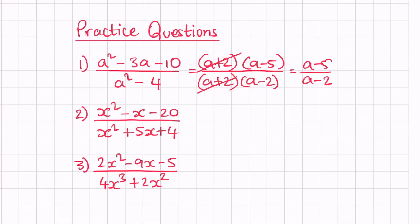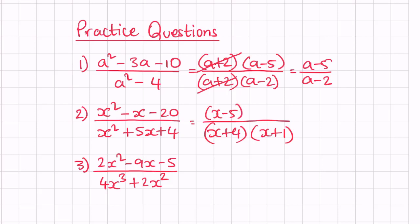Question number 2: factorize the denominator — product is 4, sum is 5, so 4 and 1 work: x plus 4 and x plus 1. For the numerator, product is minus 20 and sum is minus 1, so minus 5 times 4 works: x minus 5 and x plus 4. x plus 4 cancels out, leaving x minus 5 over x plus 1.